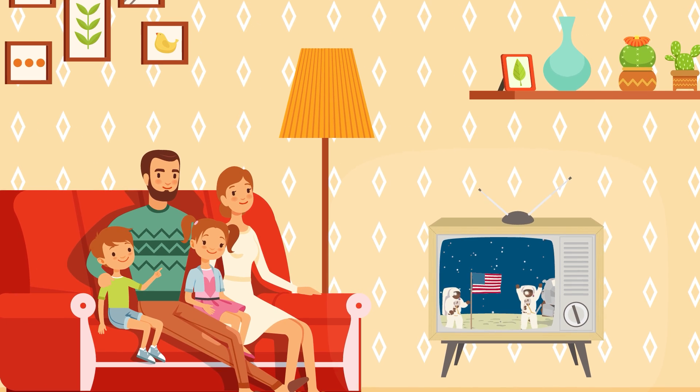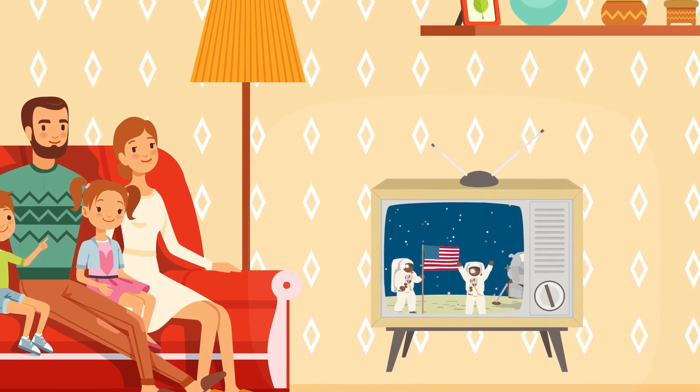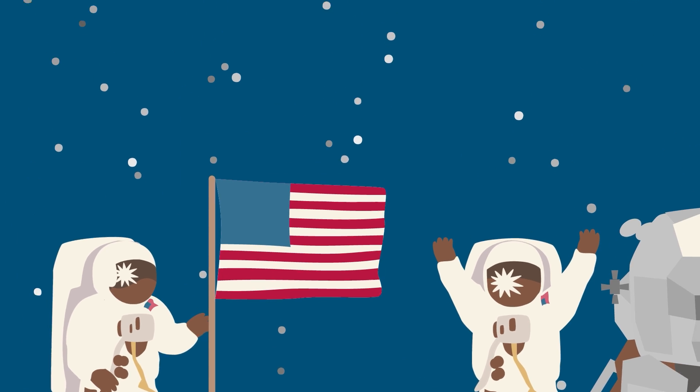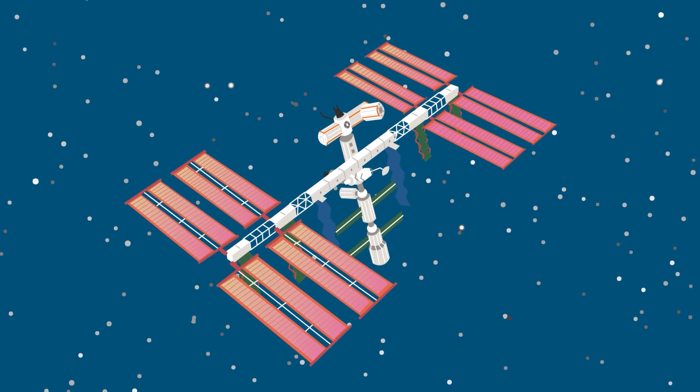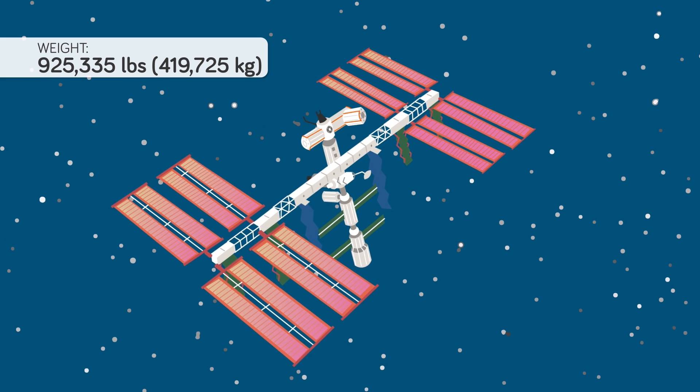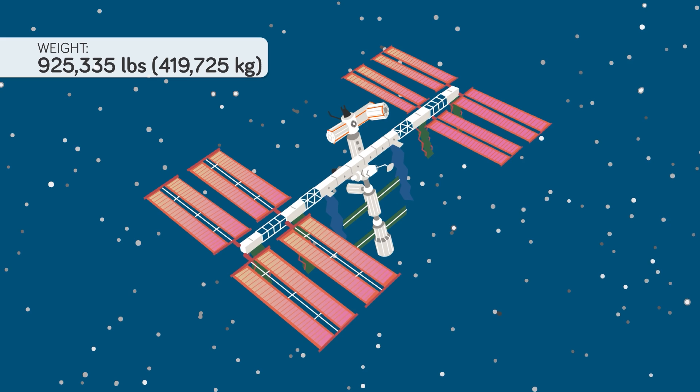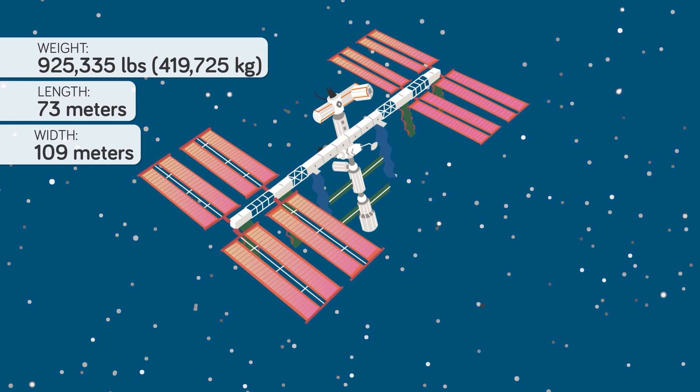After visiting the moon, the rest of the world decided that sitting parked in low earth orbit was good enough for humanity. That doesn't mean our most recent and greatest accomplishment in space, the International Space Station, isn't any less of a wonder. Weighing in at 925,335 pounds, or 419,725 kilograms for nations who didn't land on the moon, the ISS is 73 meters long and 109 meters wide.